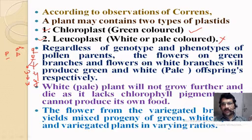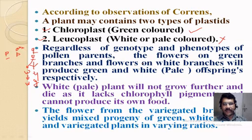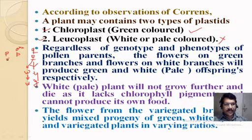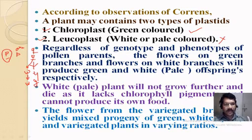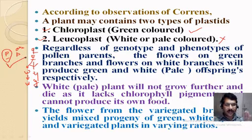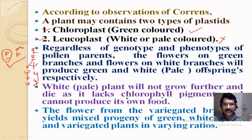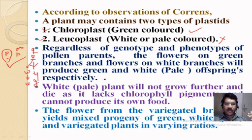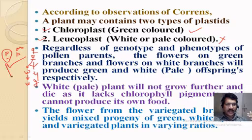Only the female parent plays a very important role in the phenotypic expression of the offspring. Male parents are only required for crossing and play no role in the expression of phenotype — they contribute only to fertilization. White or pale plants will not grow further and die as they lack chlorophyll pigments and cannot produce their own food.